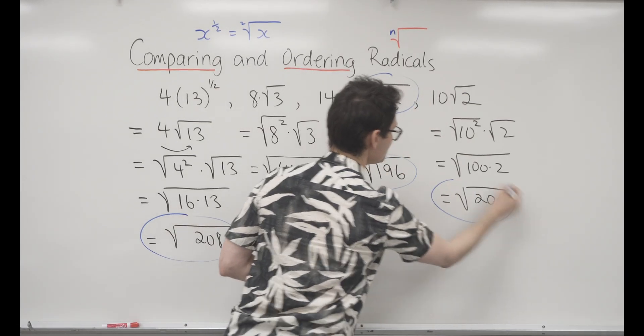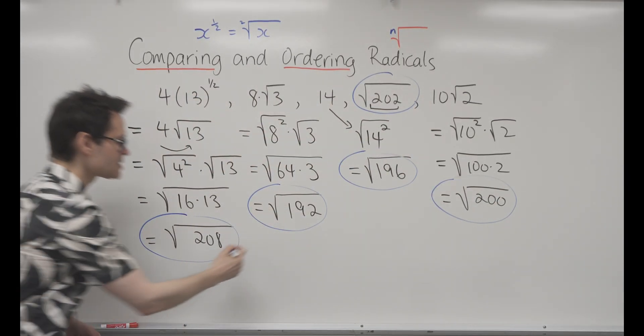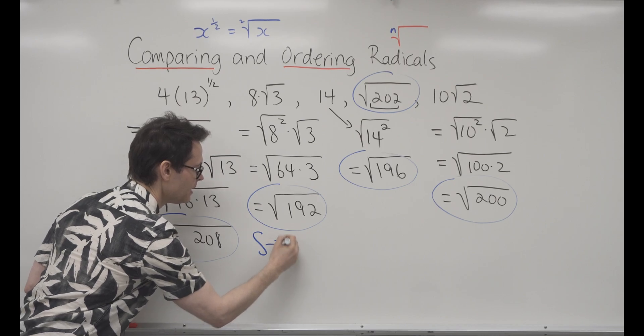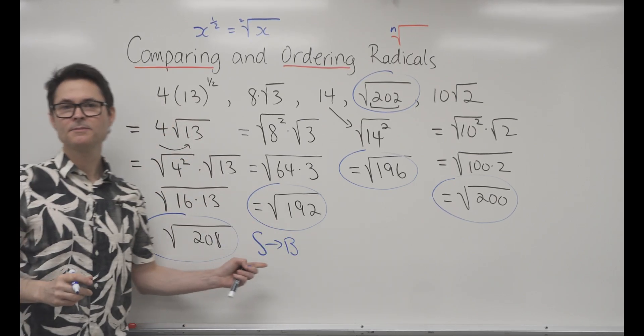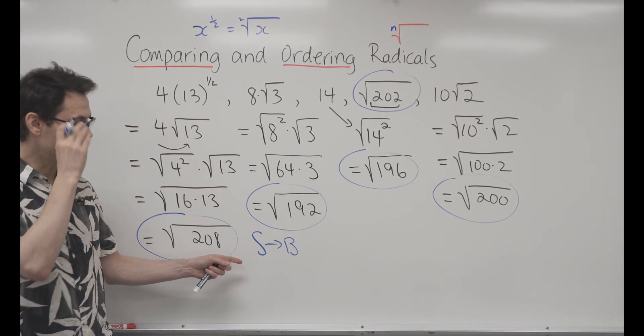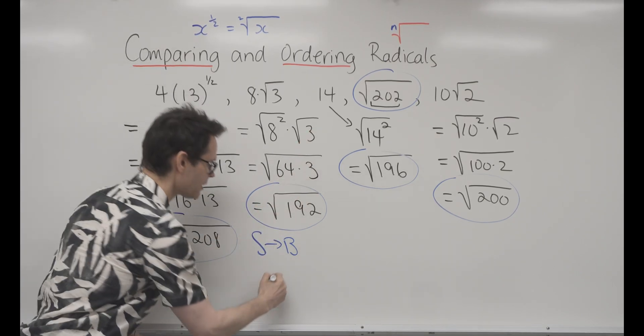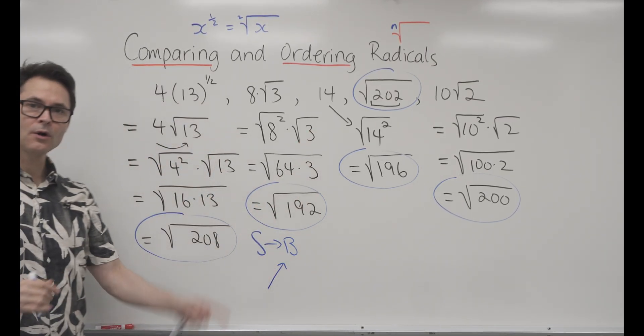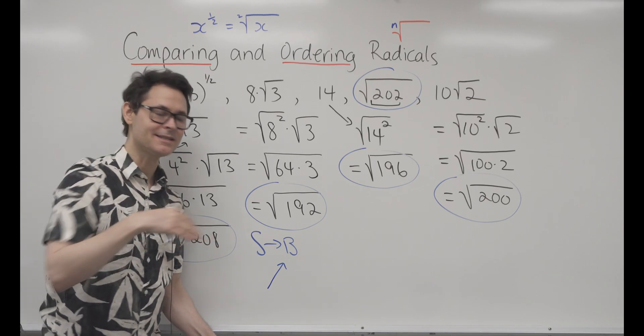If I'm going to go from small to big, that's sometimes called arranging them in ascending order. If you go from big to small, it's descending order.